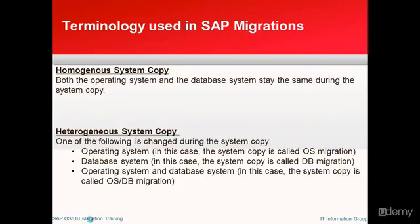System copy can be either homogeneous or heterogeneous. In a homogeneous system copy, we do not change the operating system or the database during the activity — they remain the same. For example, we may upgrade the OS or database version, but we are not changing from one vendor to another. Upgrading from Oracle 9.x to Oracle 10.x would be called a homogeneous system copy.